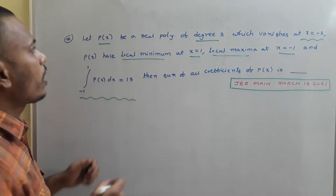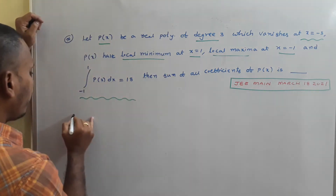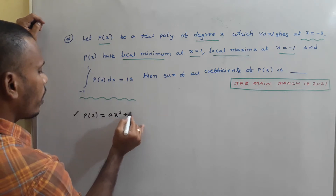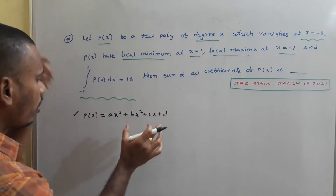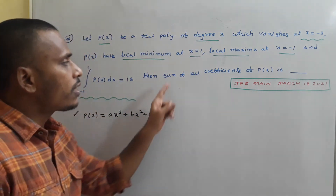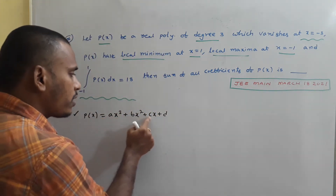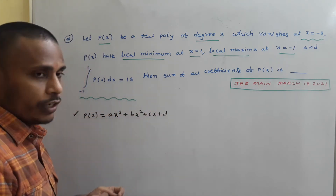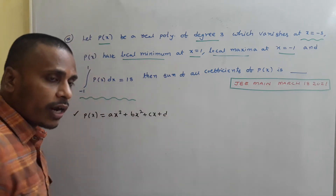Since P(x) is a polynomial of degree 3, we write P(x) = Ax³ + Bx² + Cx + D as the general form. The sum of all coefficients means we need A + B + C + D. To find these four values, we need four conditions, and fortunately four conditions are given in the problem.